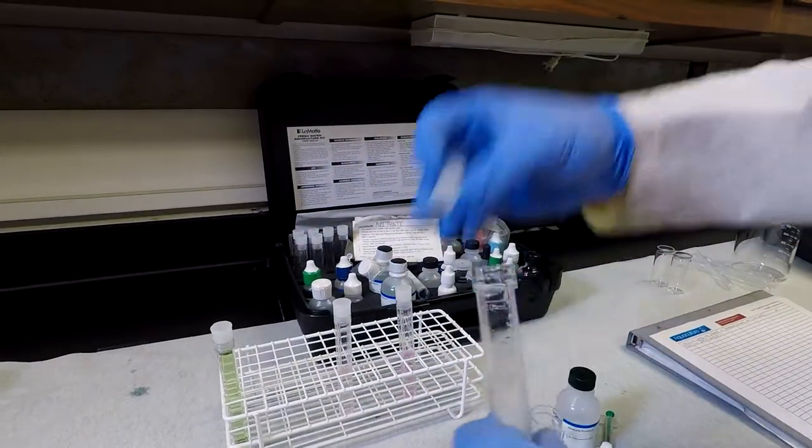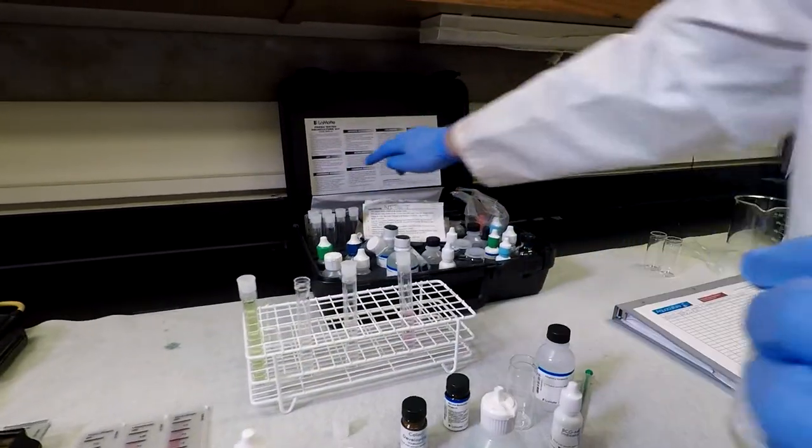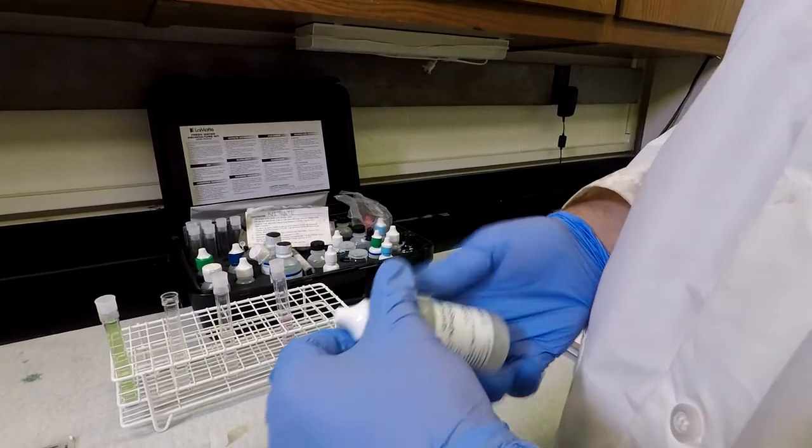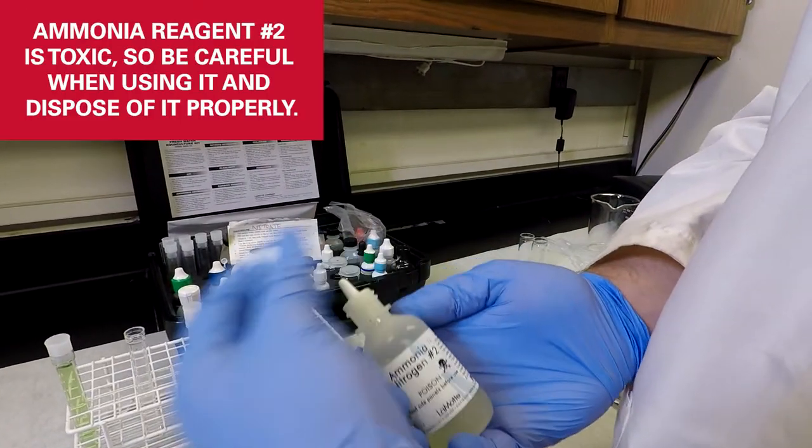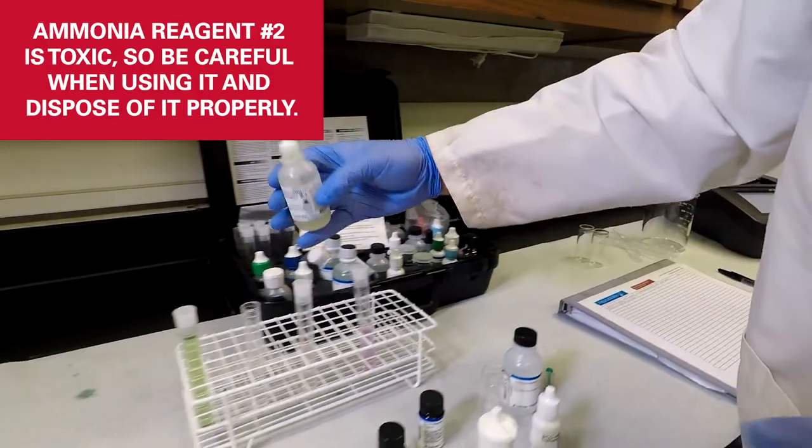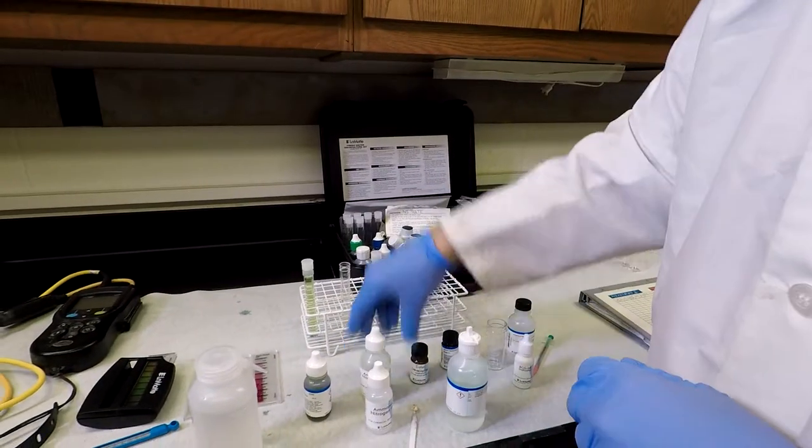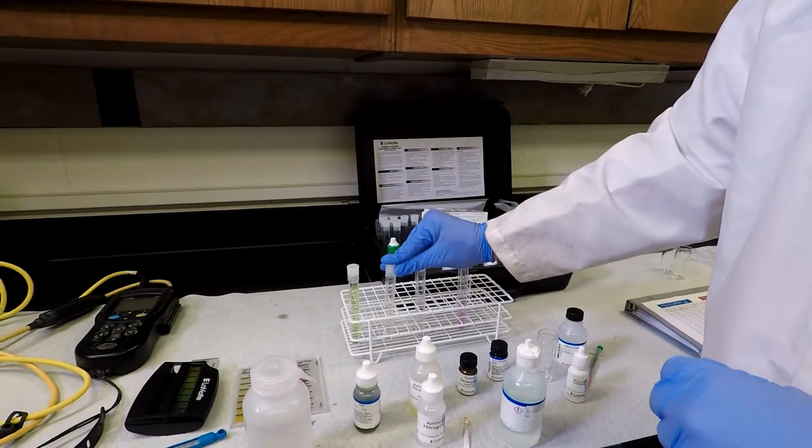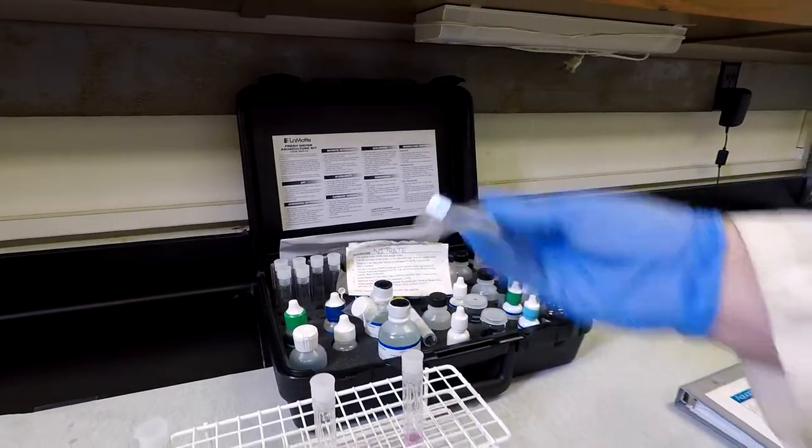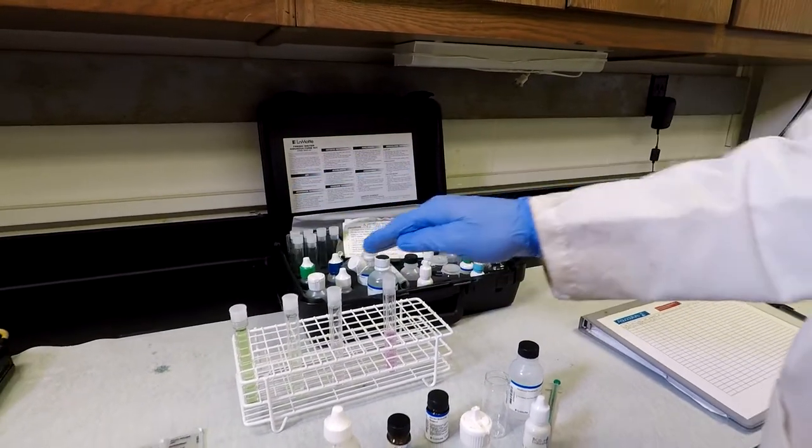We have not yet added our ammonia reagent number two. We need 12 drops of ammonia reagent number two. You want to mix this up and be careful with this particular one as it is toxic. So you don't want to get that on you and you want to dispose of it properly. Put the cap back on this and we will cover this sample, mix it up. We need to wait five minutes before we read our numbers here.